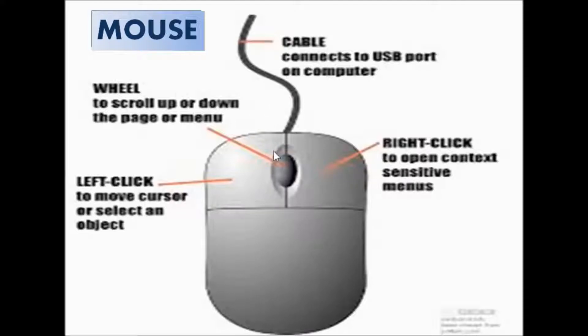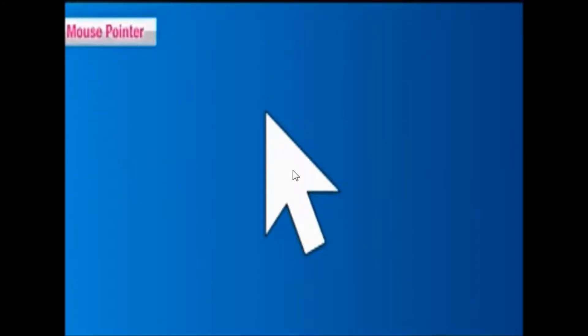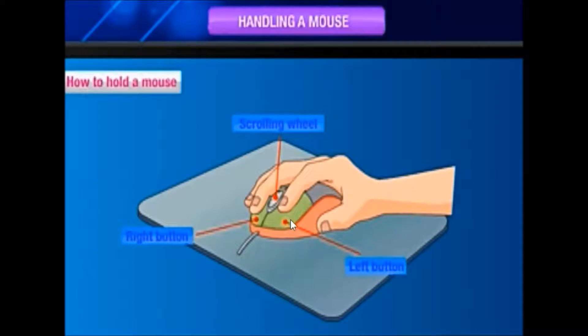You can see this arrow on screen — this is called the mouse pointer. Wherever you move the mouse on the mouse pad, the mouse pointer moves on the screen accordingly.